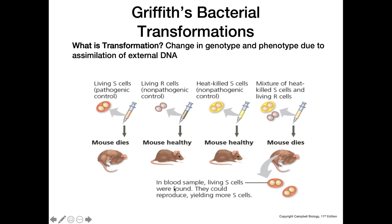We have a couple different controls for this experiment. Griffith injected live pathogenic cells into a mouse to confirm that these cells were infectious and would result in death. He also injected mice with non-pathogenic cells to confirm they did not cause harm. The last control was heat-killing some pathogenic cells, which breaks them down and makes them non-pathogenic and no longer capable of causing infection.